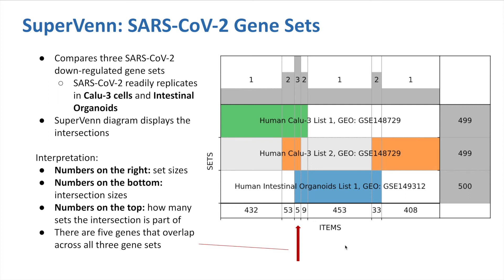To interpret this, we see that the numbers on the right display the size of each set, the numbers on the bottom display the size of each intersection, and the numbers on top display how many sets the intersection is part of. The red arrow shows where all three sets are lined up, indicating that there are five genes that overlap among all three sets. If we examine these genes, we can see which genes overlap among all the sets, and this could be interesting to further look into so we can better understand how the virus works.